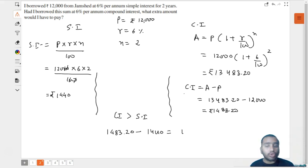That is 1,483.20 minus 1,440, which equals rupees 43.20. So this is the extra amount that would have to be paid.